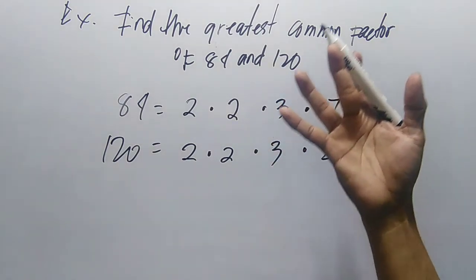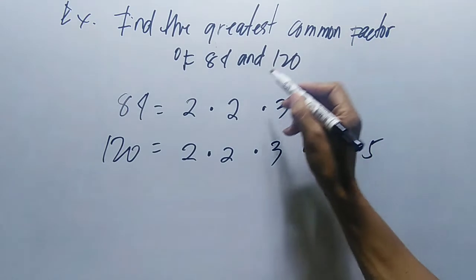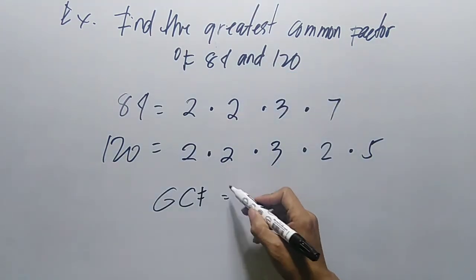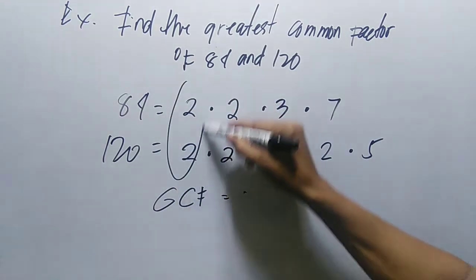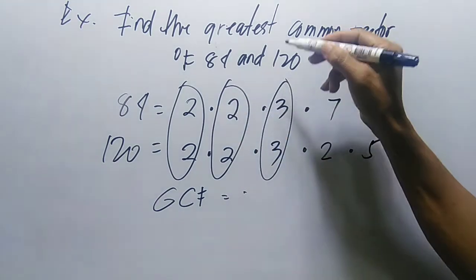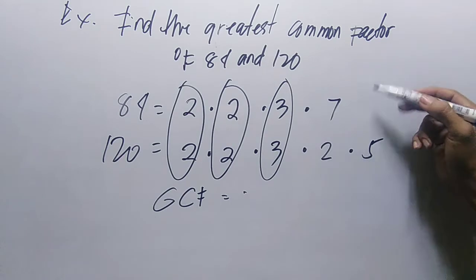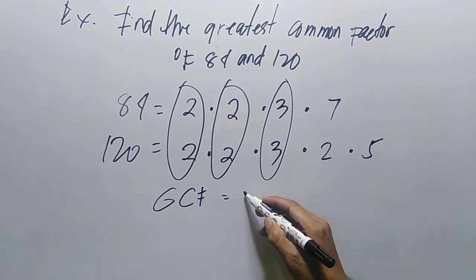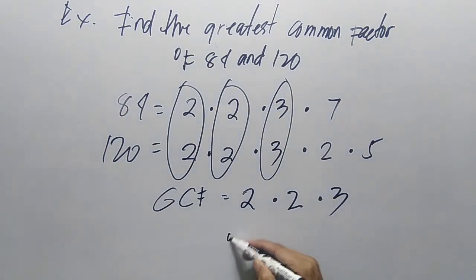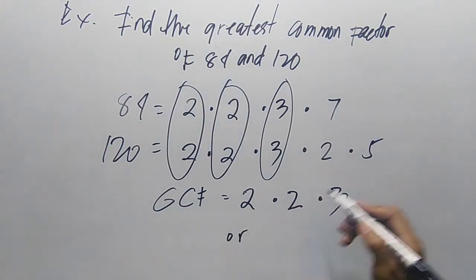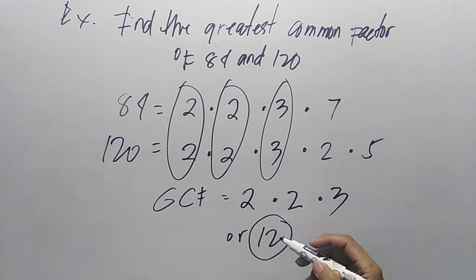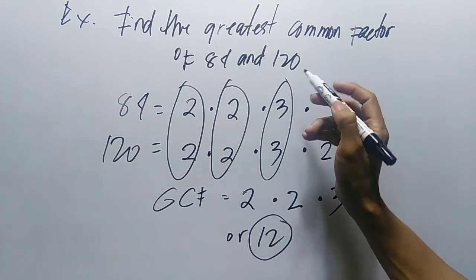Now let's find their greatest common factor or GCF. We have 2 times 2 times 3. These are all common factors. The 7 and the extra 2 and 5 are not common. So the greatest common factor is 2 times 2 times 3, which is 4 times 3, equals 12. This is the greatest common factor of 84 and 120.